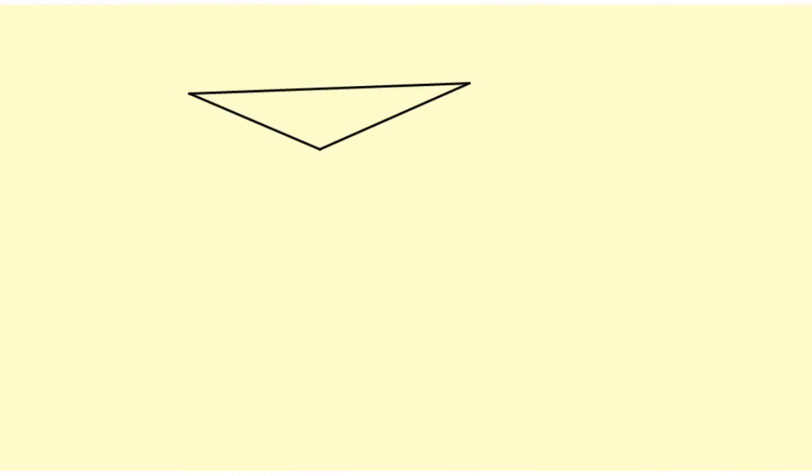Now I want to show you what happens when you have an obtuse triangle. The altitude from the vertex of one of the acute angles to the opposite side is going to be a little bit tricky to construct because if I try and draw a perpendicular from this point to the other side,